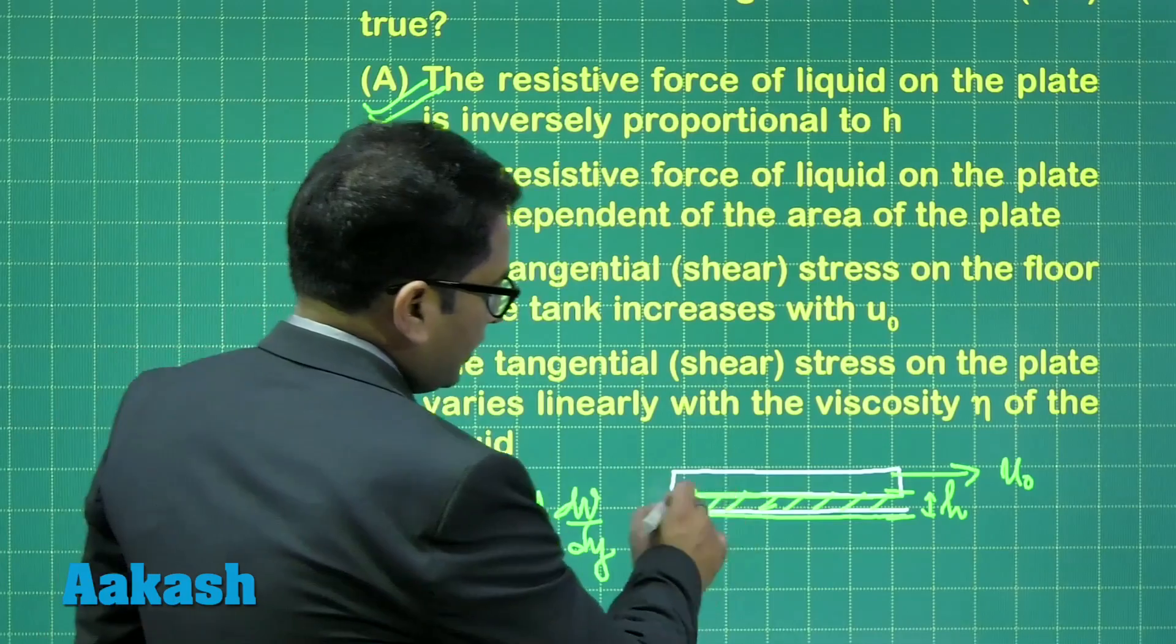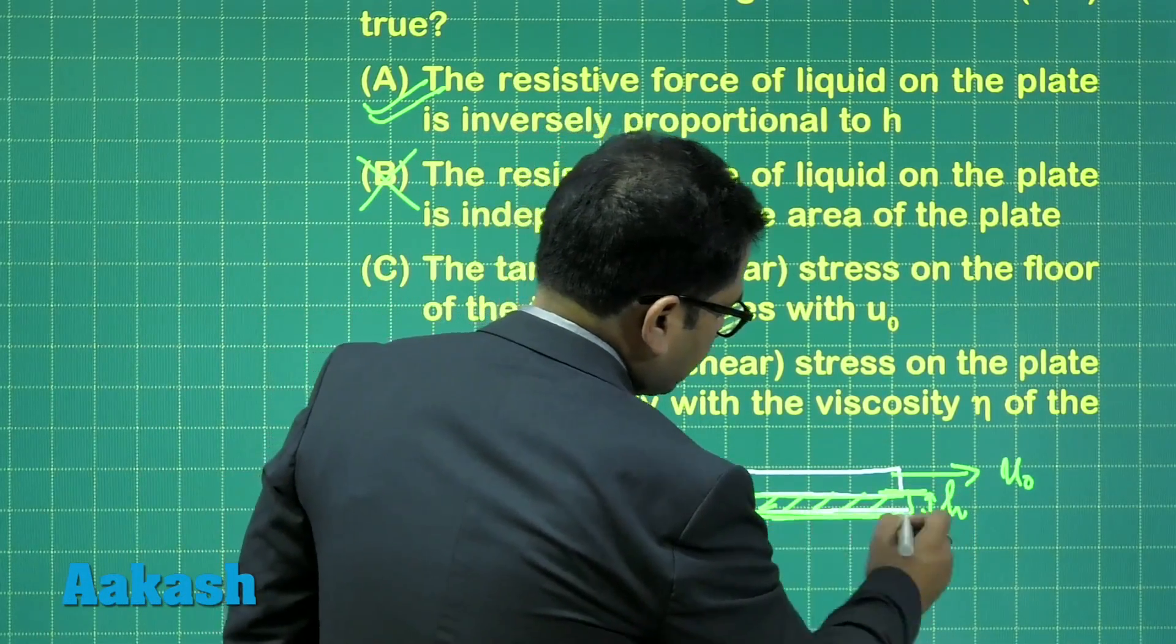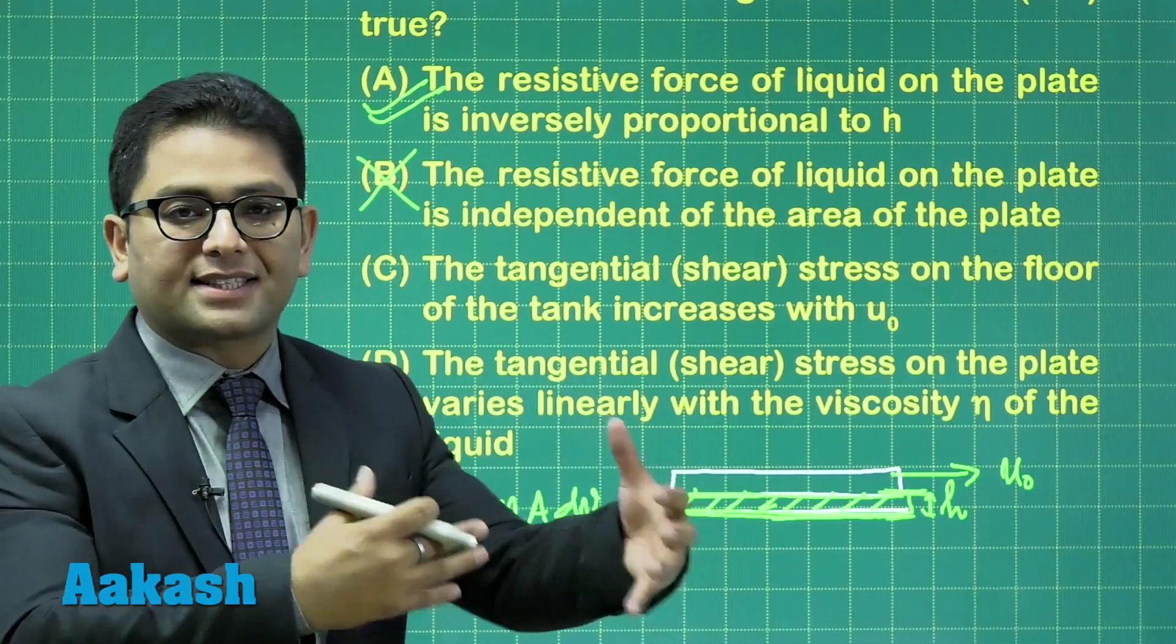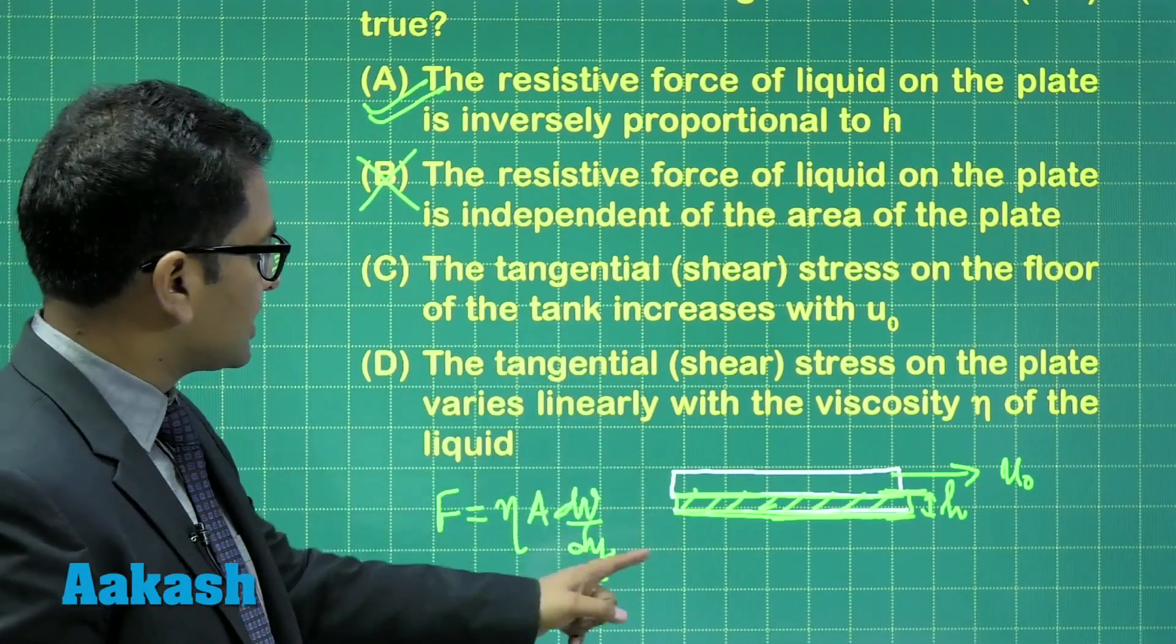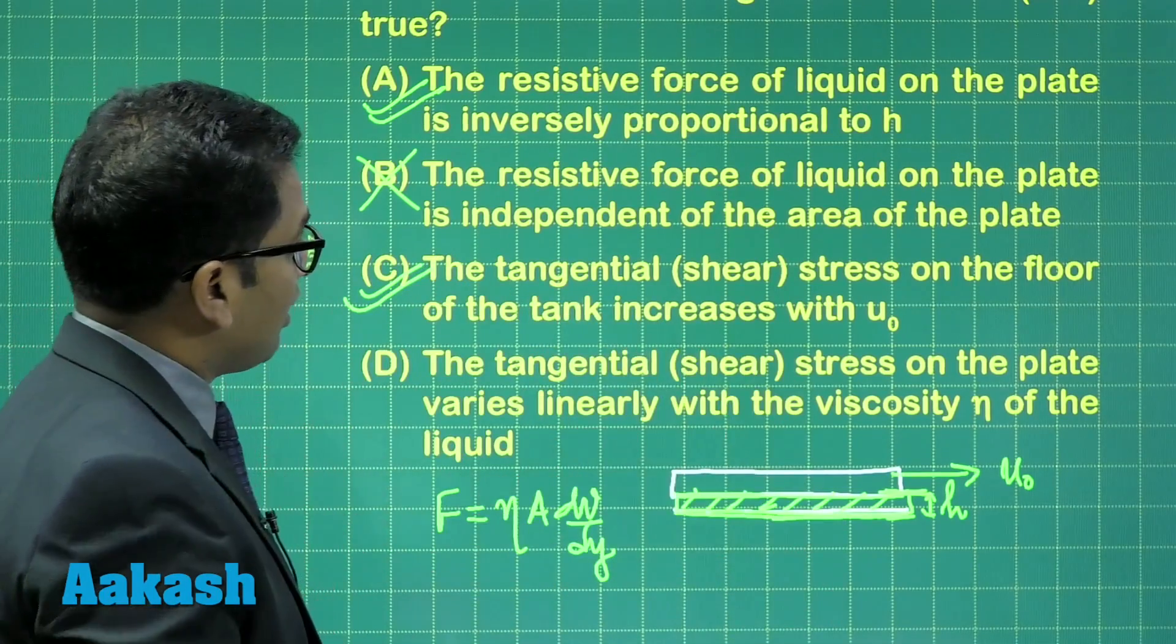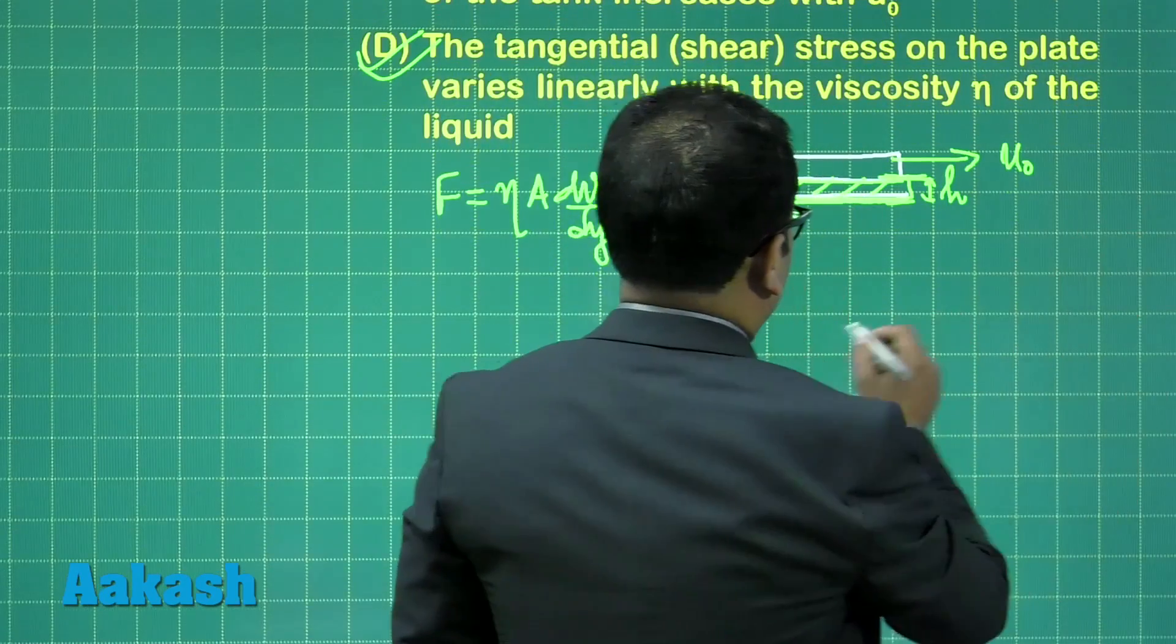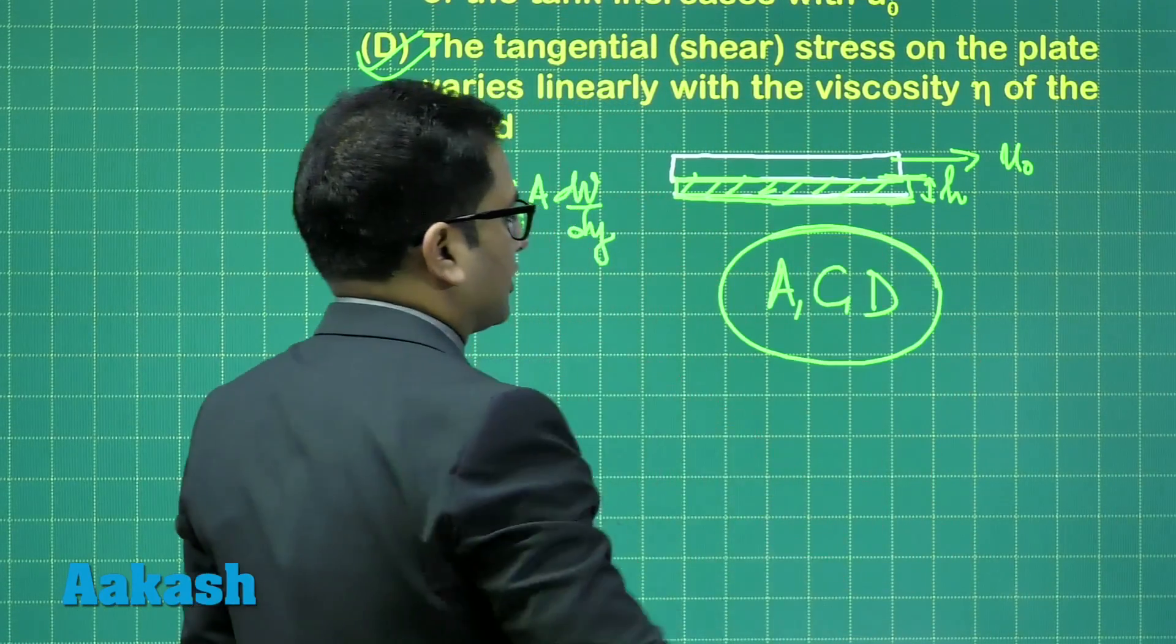The tangential stress on the floor of the tank increases with U₀. That's fine. Because, you see, if you consider this particular layer, this has a velocity U₀. This has velocity zero. So that viscous force can be or is manifested in the form of shearing stress. So you could see it increases with U₀. That's fine. And the tangential stress on the plate varies linearly with the viscosity of the liquid. That's fine. So for question number two, option A, C, and D are the correct one. Should we move to question number three?